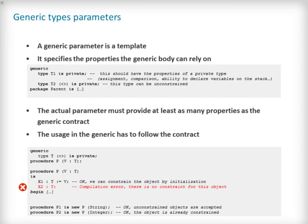Determining what parts of an algorithm can be made abstract and turning them into generic parameters is a significant part of the learning of generic programming. The specification of the generic unit must provide a clear statement to the package user of how it can be parameterised at instantiation. This acts as a contract between the package user and the generic algorithm. The first code snippet here shows that the type T1 must have the properties of a private type and T2 must be unconstrained. Whichever actual parameters are provided in the generic unit instantiation, they must provide at least as many properties as that specified in the generic contract. The generic algorithm is relying on the package user to adhere to the contract, and this is enforced by the Ada typing system at compilation.